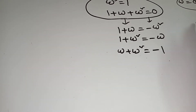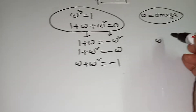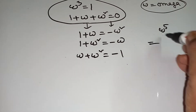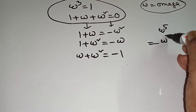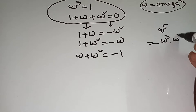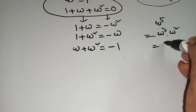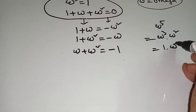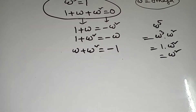If given omega to the power 5, you can write it as omega cube into omega square. Omega cube equals 1, so it becomes 1 into omega square, which equals omega square.